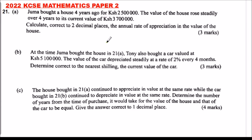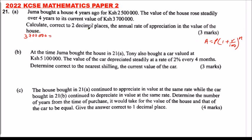When we are calculating appreciation, we use a formula of compound interest. That is: Amount = Principal × (1 + R/100)^n, where R is the rate of interest and n is the number of years. Because here we have been given the amount — the amount is what the house has appreciated to — so we say it is 3,700,000. That is the amount, equal to the initial value, the principal, which is 2,500,000.